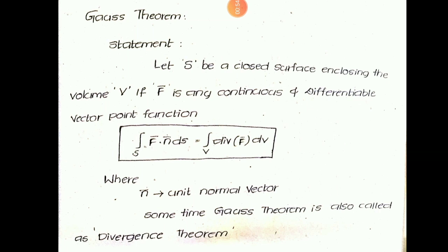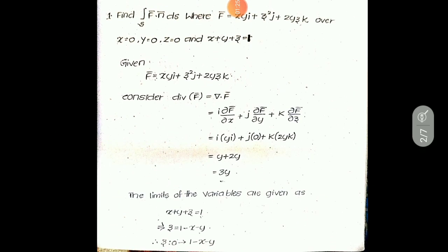Here F̄ is the vector point function and N̄ is the unit normal vector. You need to calculate the unit normal vector — don't substitute the perpendicular vector directly. Gauss theorem is also called the divergence theorem because the right-side integrand involves the divergence. It is a relation between the surface integral and the volume integral.